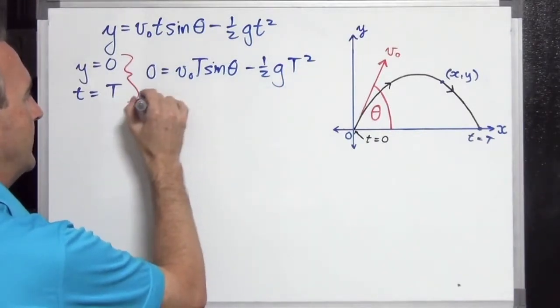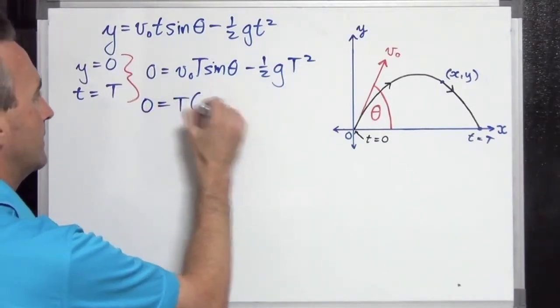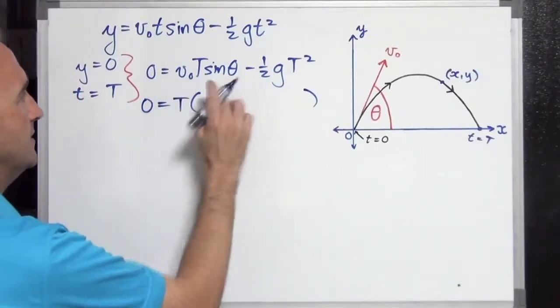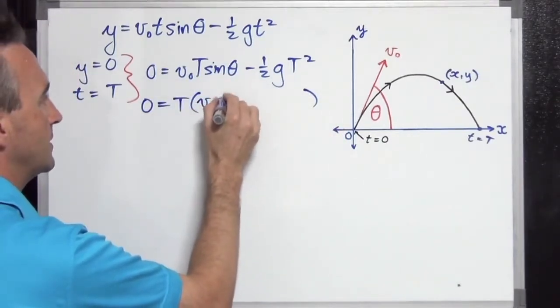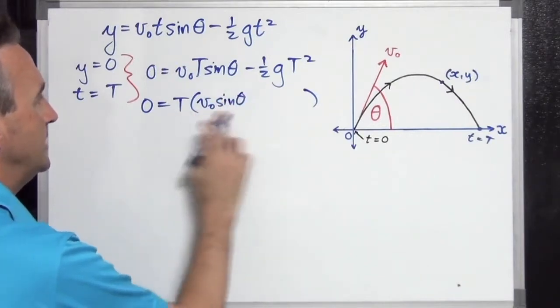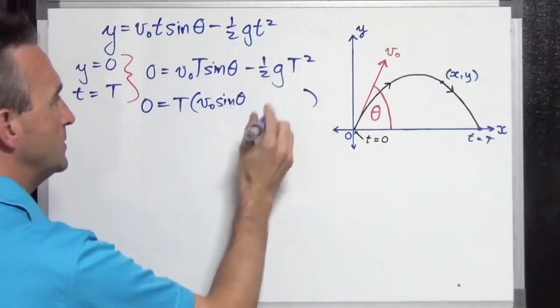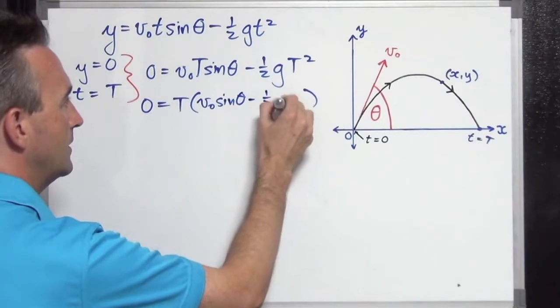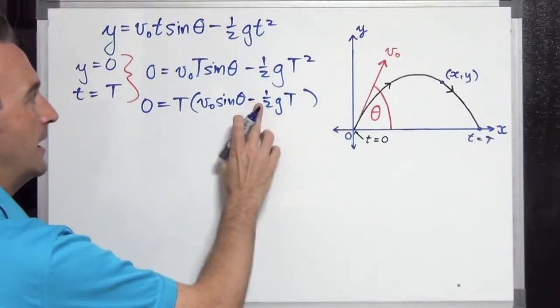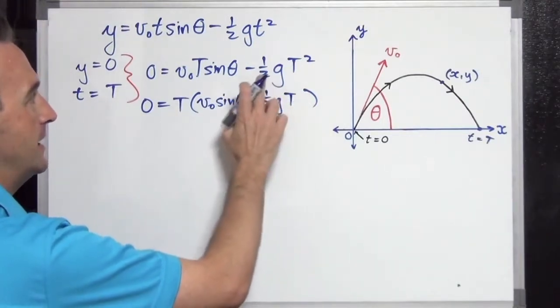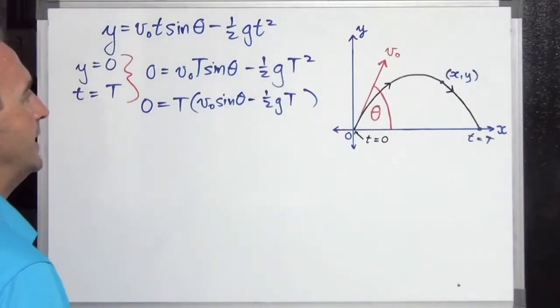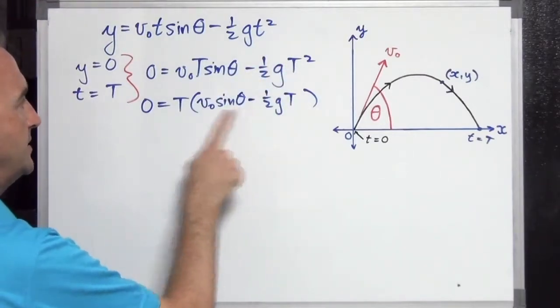What can we do? Well, we can factor out a capital T here. And what goes inside? T times what gives this? V naught sine theta. T times what gives this? Well, the T squared is just going to be negative one half gt, so T times a half gt is going to be a half gt squared.